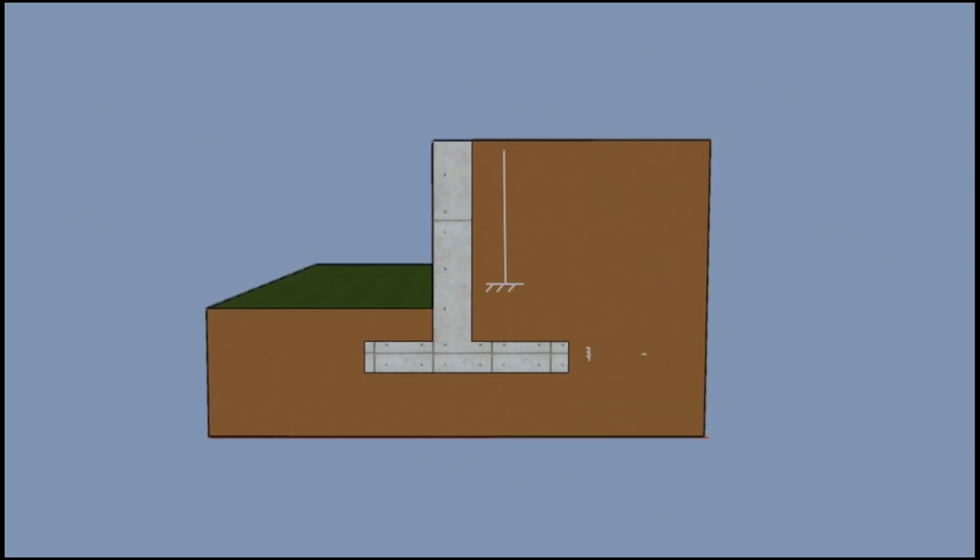The vertical stem in a cantilever retaining wall resists earth pressure from the backfill side and bends like a cantilever. The thickness of the cantilever slab is larger at the base of the stem and decreases gradually upwards due to reduction of soil pressure with decrease in depth.